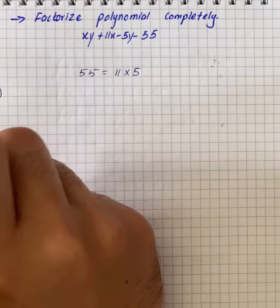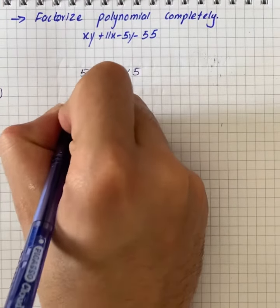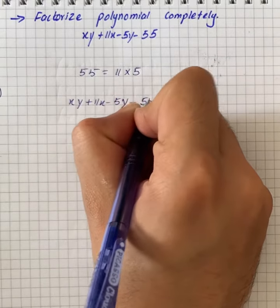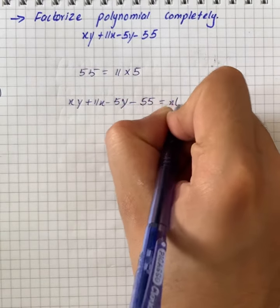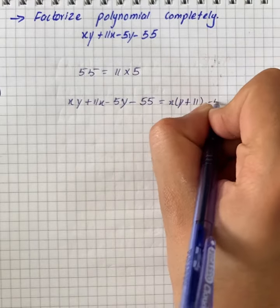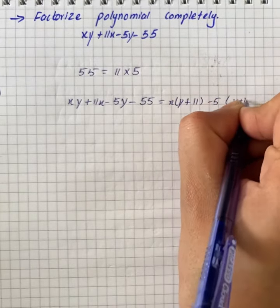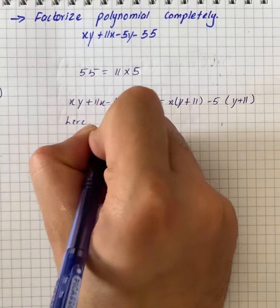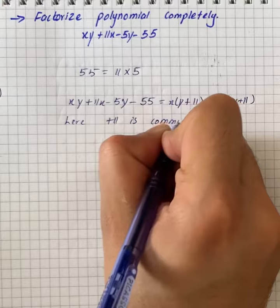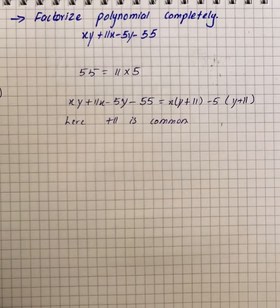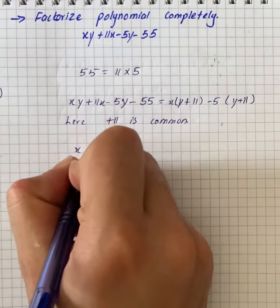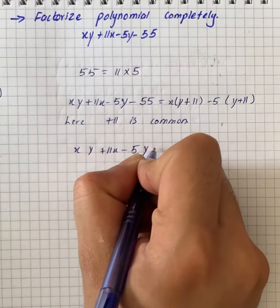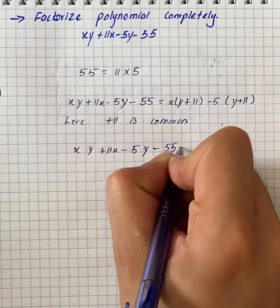Now we will find the factor of the polynomial. We have xy plus 11x minus 5y minus 55, which equals x into y plus 11 minus 5 into y plus 11. Here we can see that y plus 11 is common.